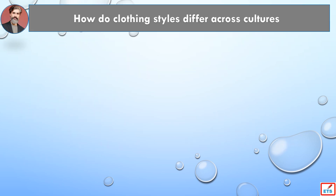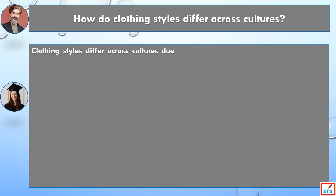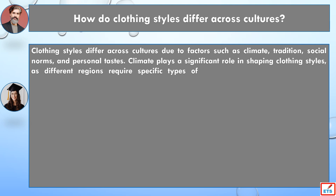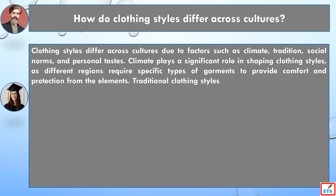How do clothing styles differ across cultures? Clothing styles differ across cultures due to factors such as climate, tradition, social norms, and personal tastes. Climate plays a significant role in shaping clothing styles, as different regions require specific types of garments to provide comfort and protection from the elements.